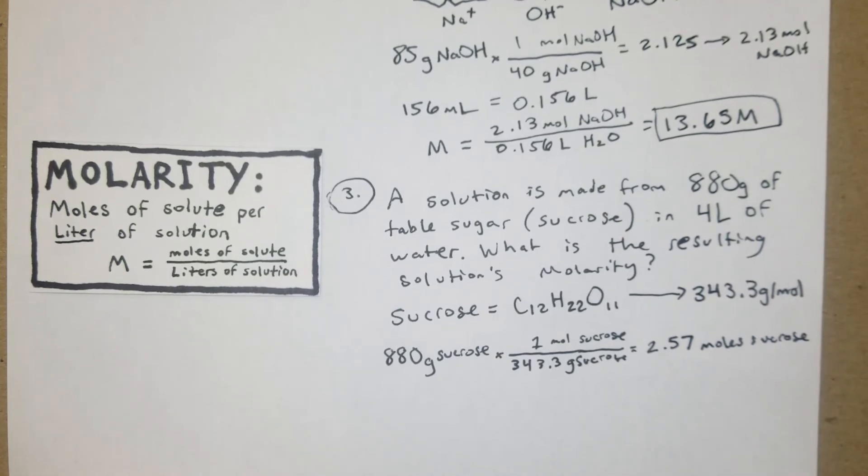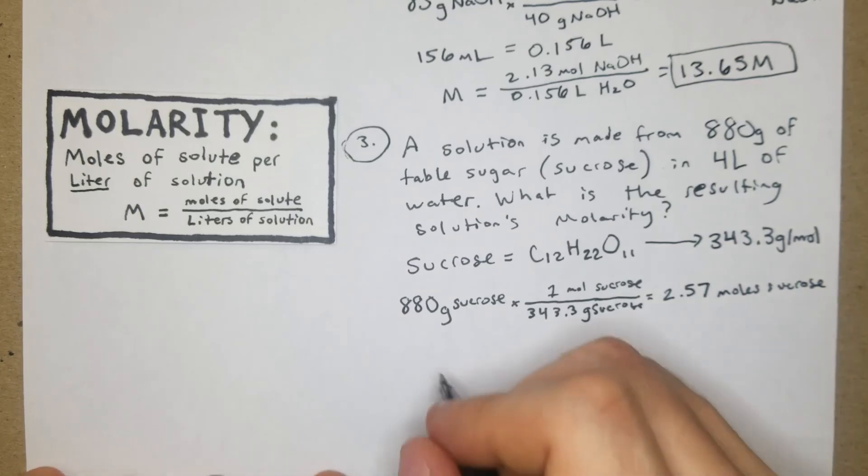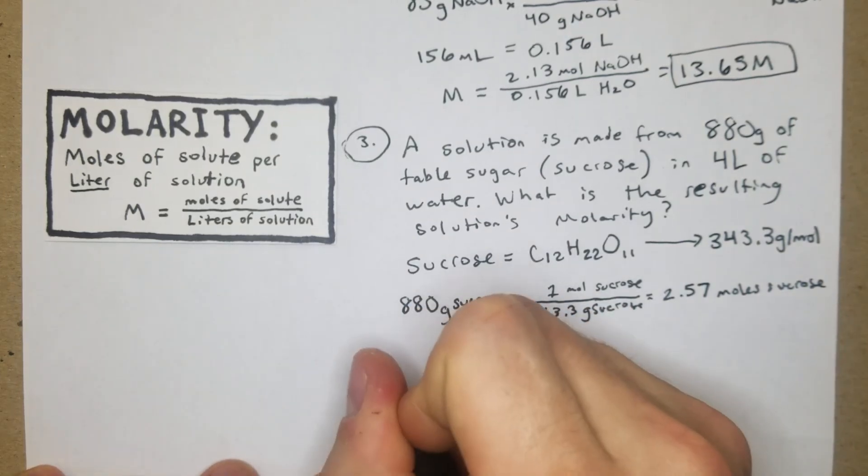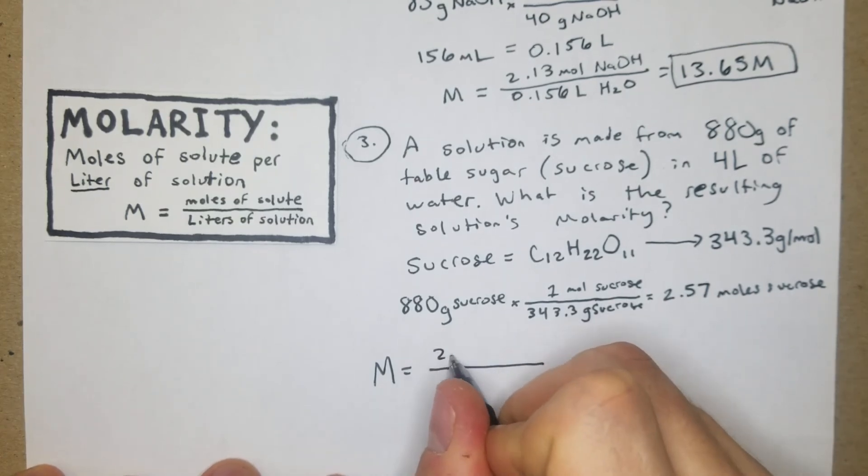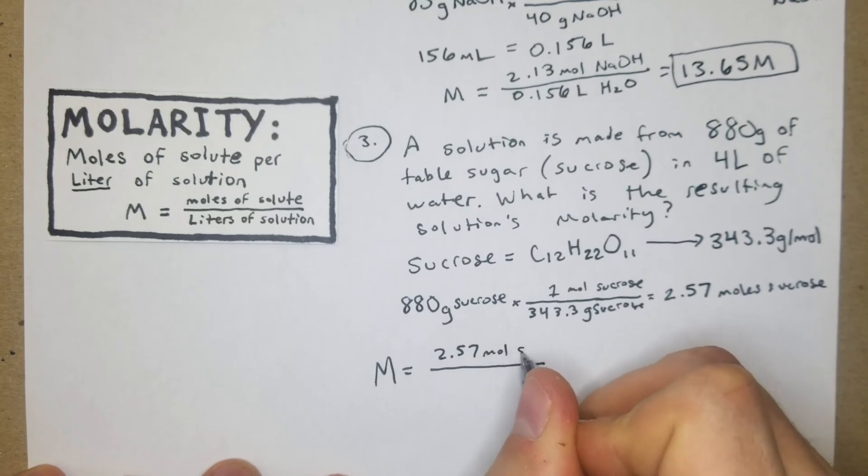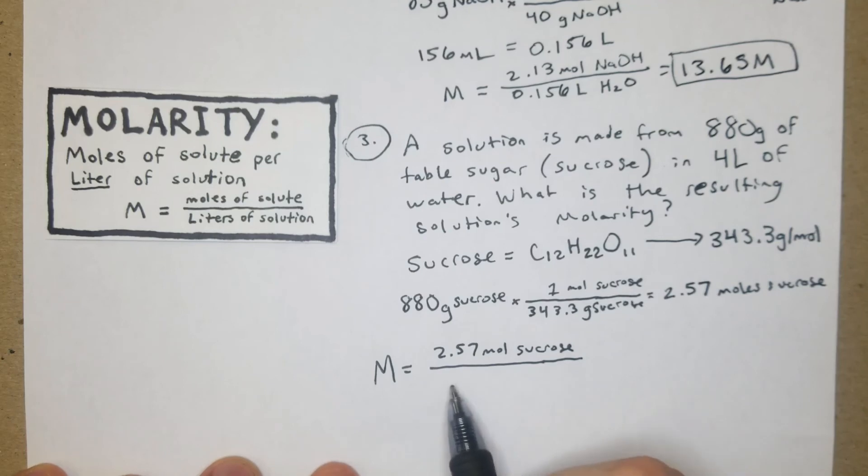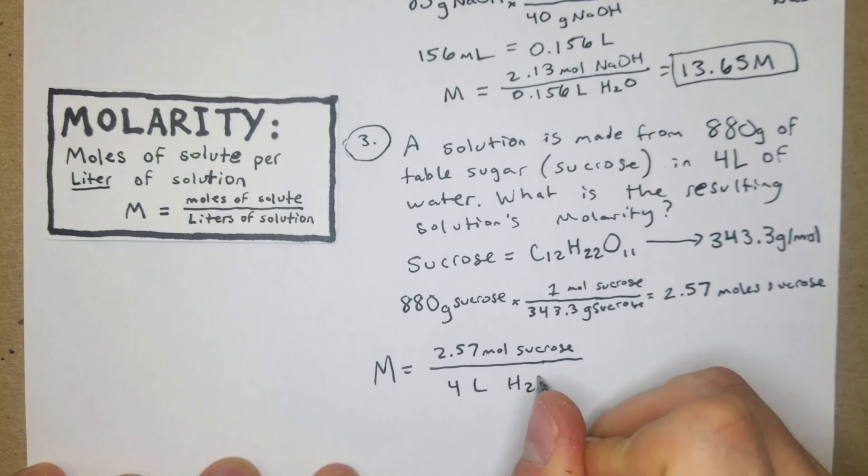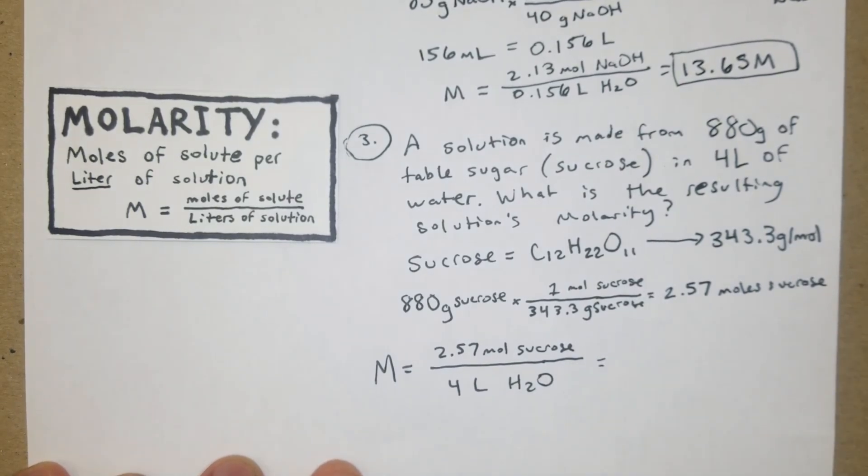Then from there we'll plug in our moles to the formula for molarity. The molarity is going to equal the moles, which we just calculated to be 2.57 moles sucrose, divided by our liters - which we have here as 4 liters. That's just going to be 2.57 divided by 4, which equals 0.643 molar.